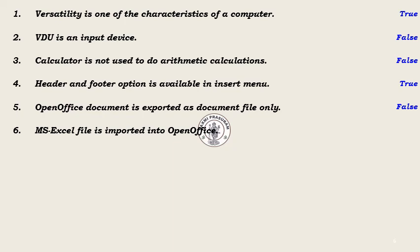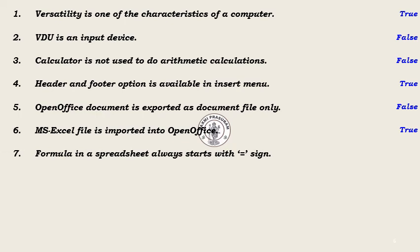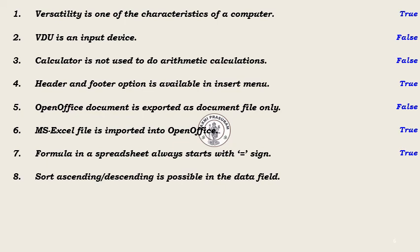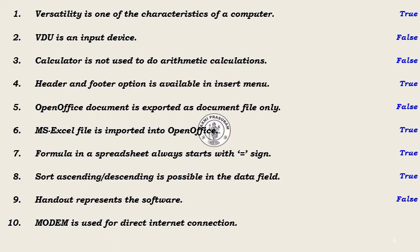4. Header and footer option is available in Insert menu — True. 5. OpenOffice document is exported as document file only — False. 6. MS Excel file is imported into OpenOffice — True. 7. Formula in a spreadsheet always starts with an equal to sign — True. 8. Sorting ascending or descending is possible in the data field — True. 9. Handout represents the software — False. 10. Modem is used for direct internet connection — False.